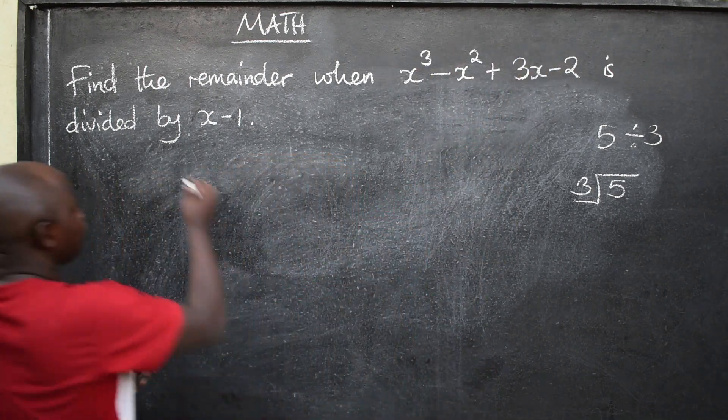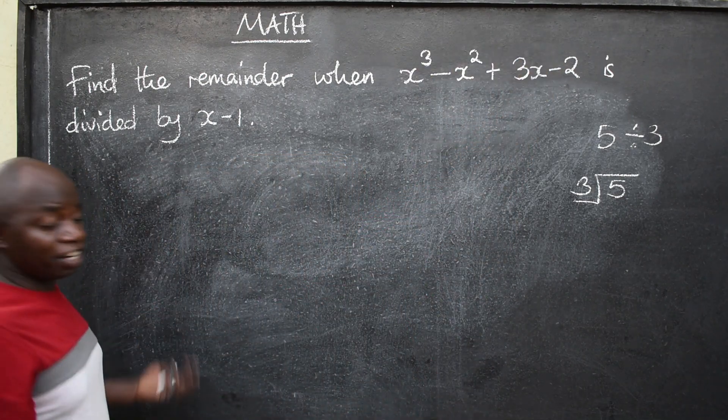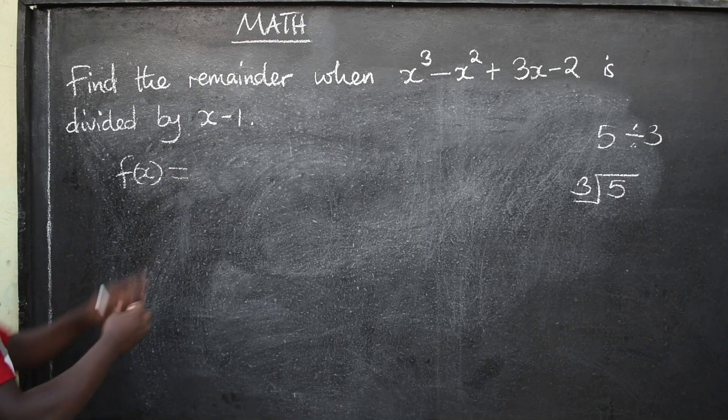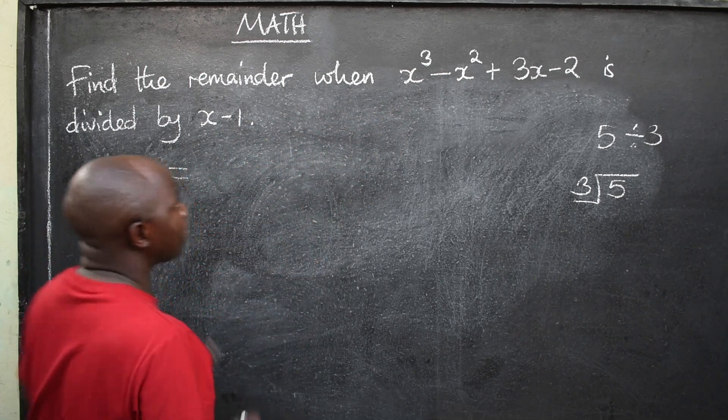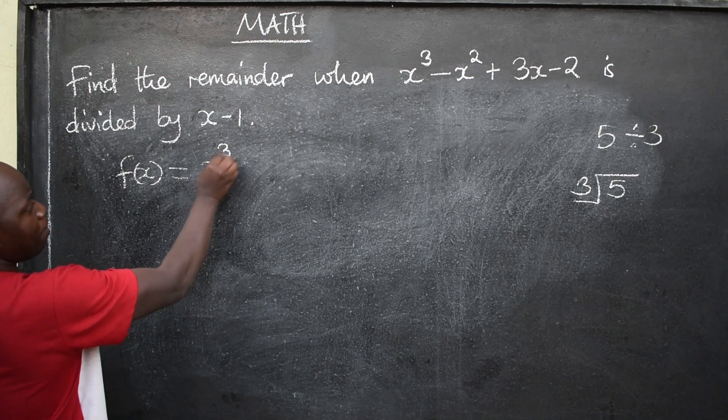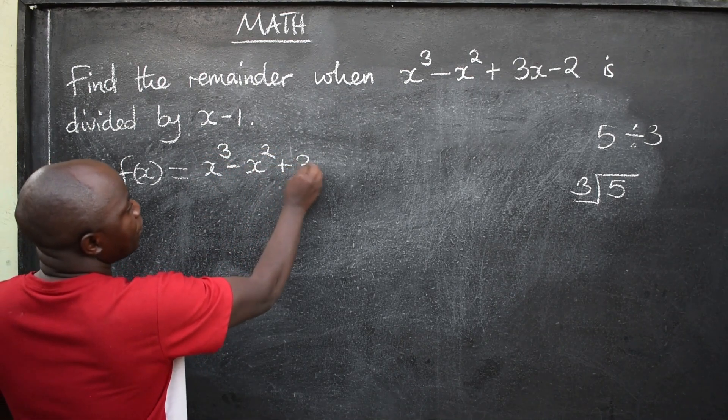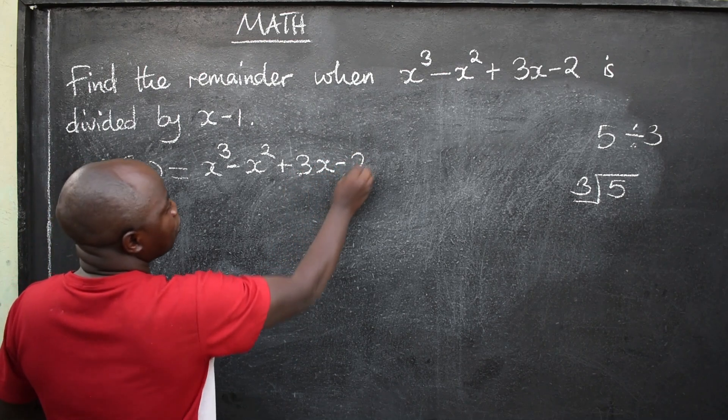So you will be able to say, you copy the polynomial which you can write in a function form to say f of x is equal to, or just copy the way it is, there's no problem, x to the power 3 minus x squared plus 3x minus 2.